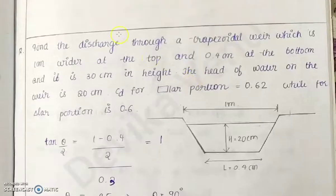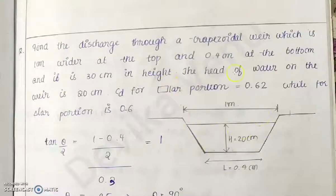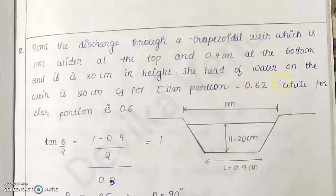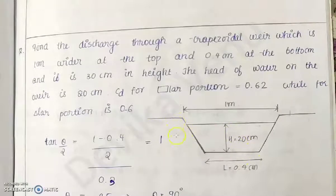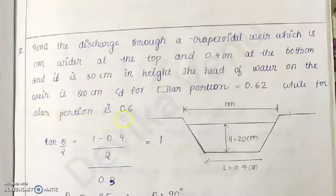We will see one example. Find the discharge over a trapezoidal weir which is 1 meter wide at the top and 0.4 meter at the bottom, and it is 30 centimeters in height. The water on the weir is 20 centimeters, so the head of the water is 20 centimeters, and the total height of the weir is 30 centimeters.